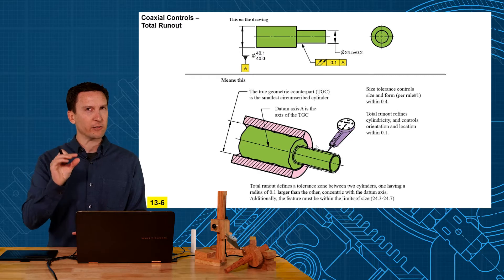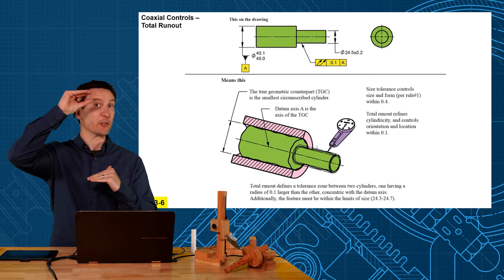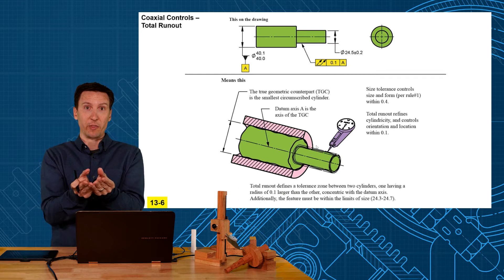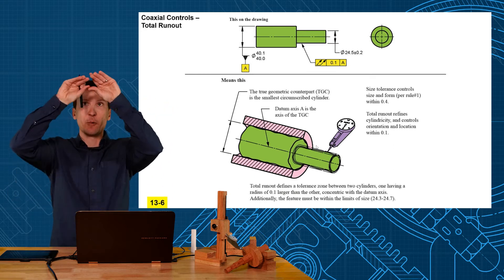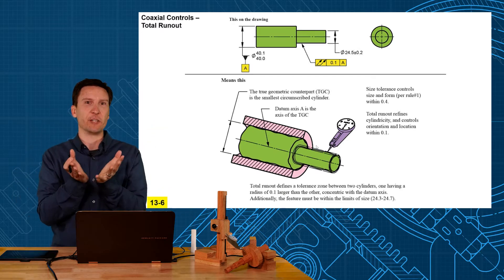Now runout is slightly different. You're shifting the tolerance zone to the surface. So when you control the surface within that tolerance zone not only do you control location and orientation but you're also controlling the form of the feature as well.